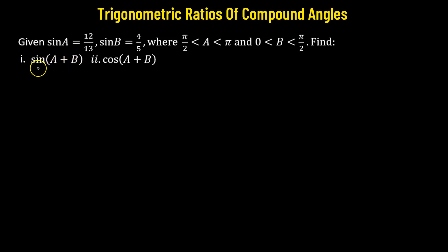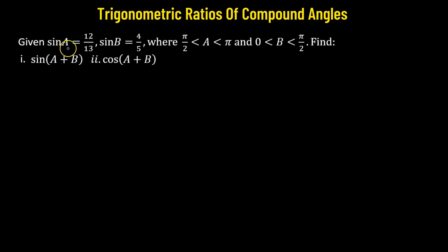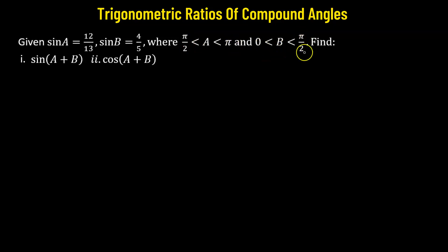In this problem, we need to find out the value of the trigonometric ratio sine of the compound angle a plus b. We are provided with the value of sine a and sine b, and also the condition that a lies between pi over 2 and pi radians, and b lies between 0 and pi over 2 radians. Let us begin.